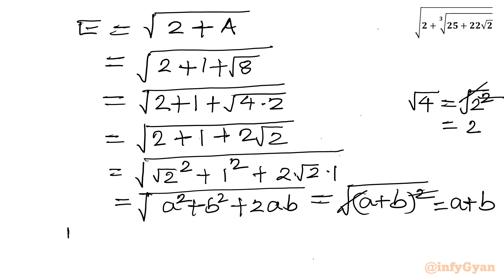So I can write our expression E equal to, it would be square root of root 2 plus 1 whole square. Now we can cancel square root with this square. So our ultimate answer for this expression would be square root 2 plus 1.